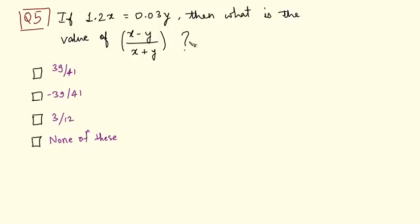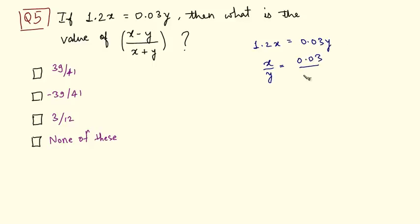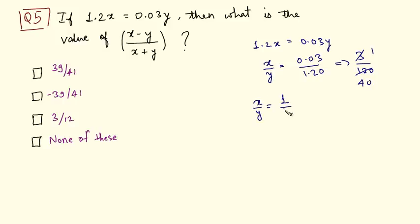This last question is a bit of a tricky one. Let's find out its answer. We have been given 1.2x is equal to 0.03y. So I can write x by y is equal to 0.03 by 1.20. The numbers of digits after the decimal point in numerator and denominator are the same, so I can ignore the decimal point. This becomes 3 by 120, which simplifies to 1 by 40. So x by y is equal to 1 by 40.